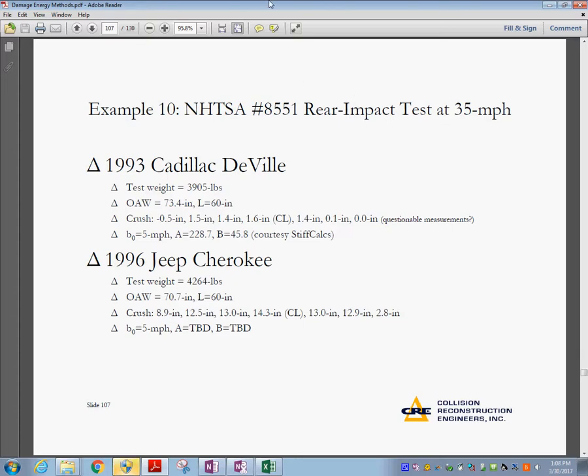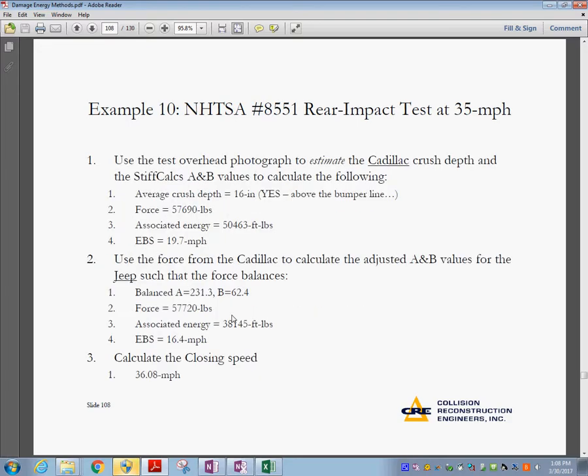When you see deformation reaching the windshield, that tells you that actually happened at very high speed. These are the values for the 1993 Cadillac DeVille and 1996 Jeep Cherokee. You have the data in here. L 60 inches, the width. And these are the measurements. Then B, A, and B.